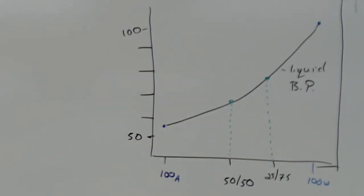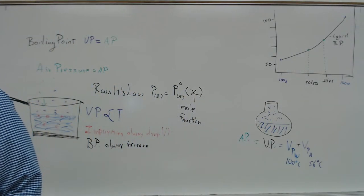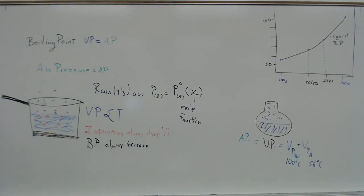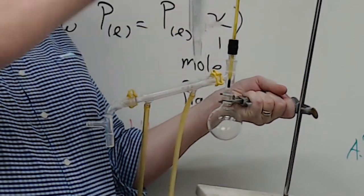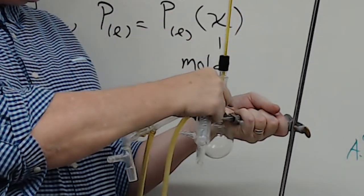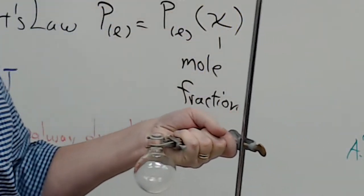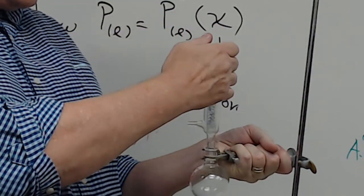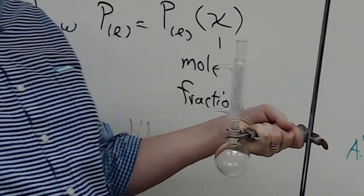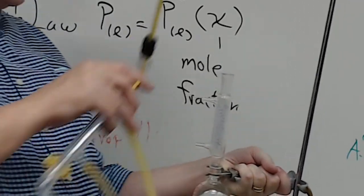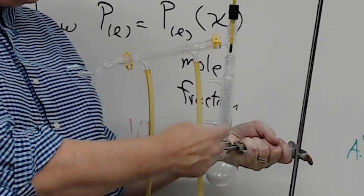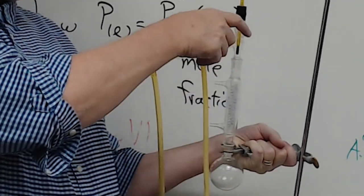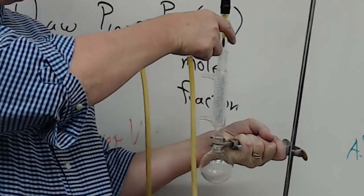That's part one of the lab. For part two, we're going to do something special: add a fractionating column. We're going to add this piece of glassware filled with glass beads in between the round-bottom flask and the condenser on top. The purpose of this extra column is called a fractionating column.